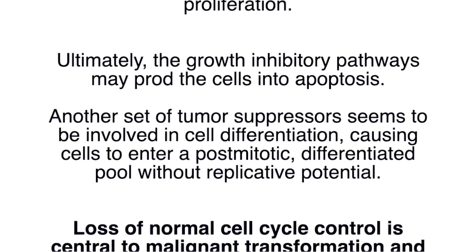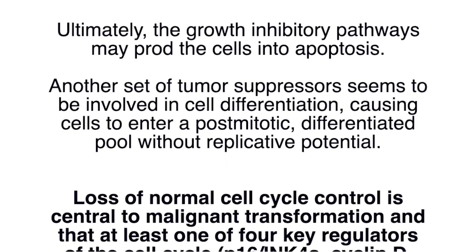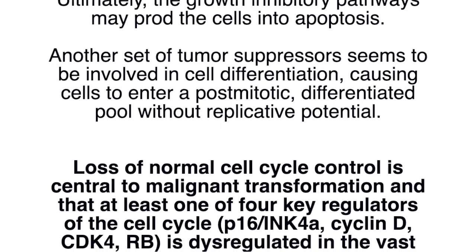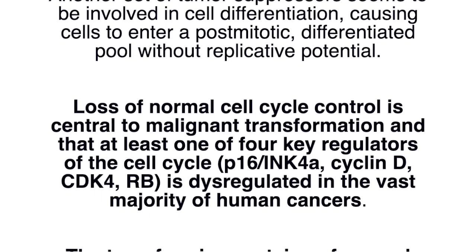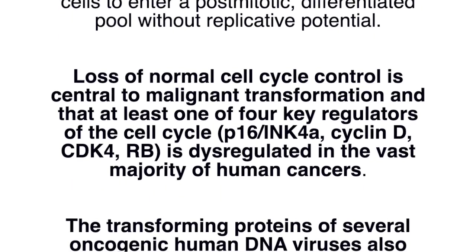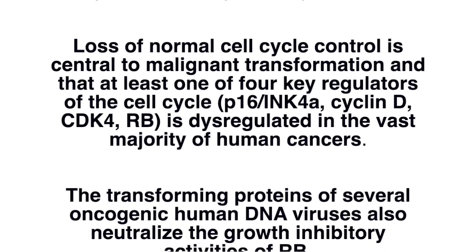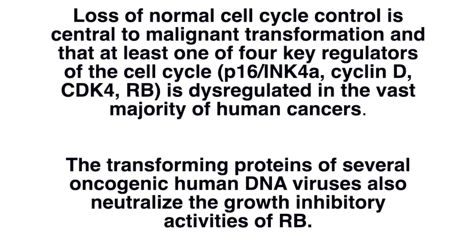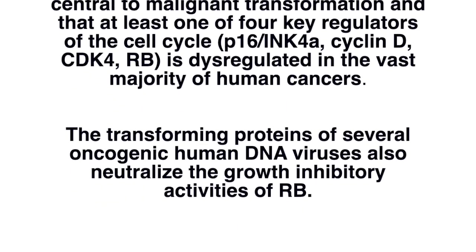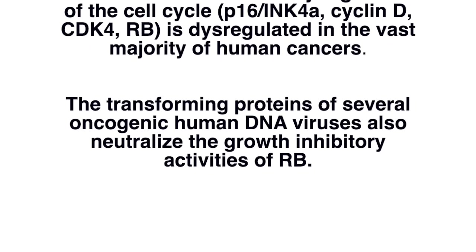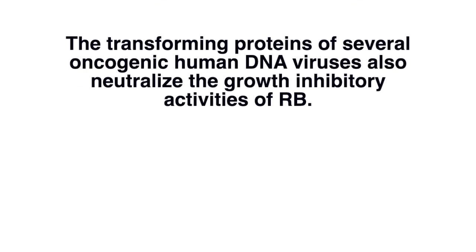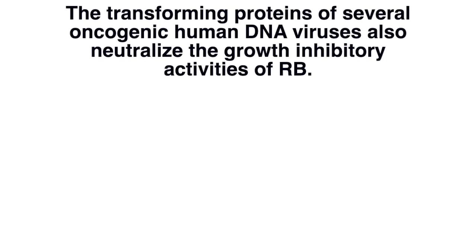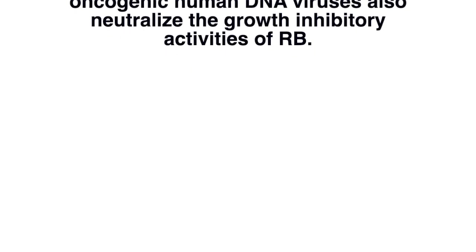Ultimately, the growth inhibitory pathways may prod cells into apoptosis. Another set of tumor-suppressors seems to be involved in cell differentiation, causing cells to enter a post-mitotic differentiated pool without replicative potential. Loss of normal cell cycle control is central to malignant transformation, and at least one of the four key regulators of the cell cycle — P16/INK4A, cyclin D, CDK4, and RB — is dysregulated in the vast majority of human cancers. The transforming proteins of several oncogenic human DNA viruses also neutralize the growth inhibitory activities of RB.